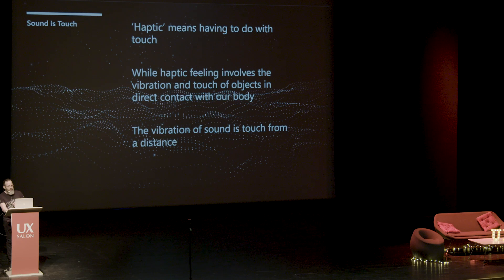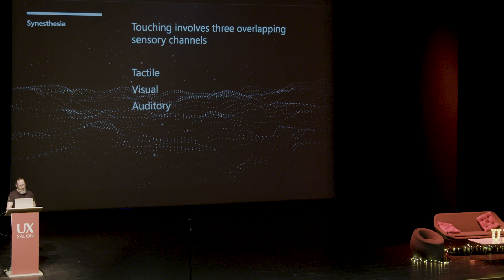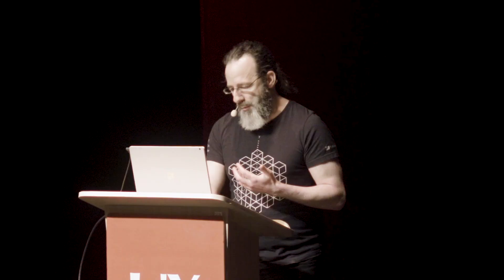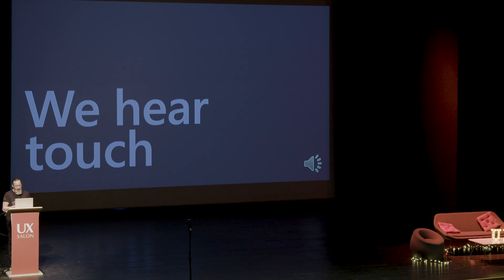Haptic means having to do with touch. While haptic feeling involves vibration and touch of objects in direct contact with our body, the vibration of sound is touch from a distance. Touching involves three overlapping sensory channels — the tactile, the visual, and the auditory — and these form a connected web. We're highly skilled at using vibrations and sounds produced by touch to identify texture, contour, and other material properties. We generally don't even have to think about it. So each one of these senses can evoke the others — we can hear touch, tactility, texture, and contour.